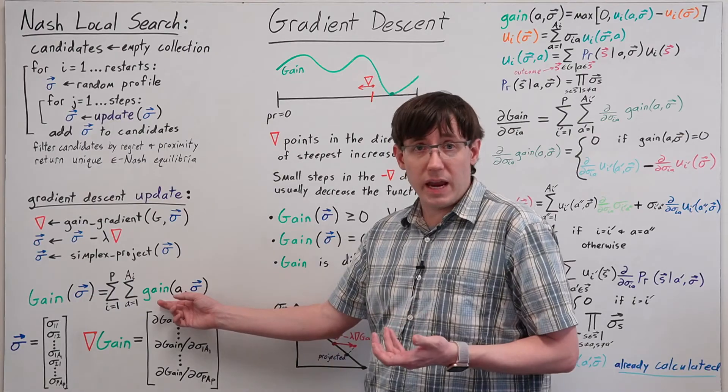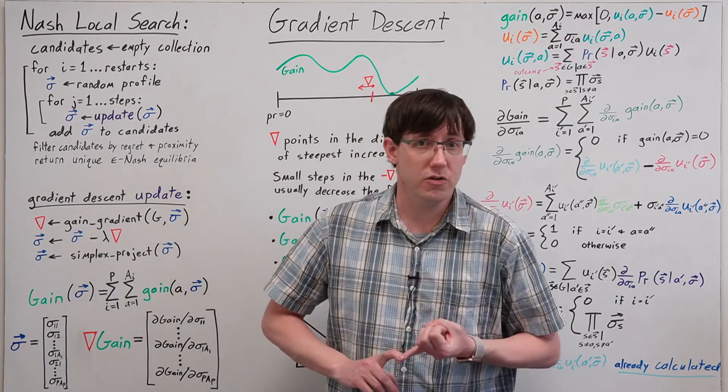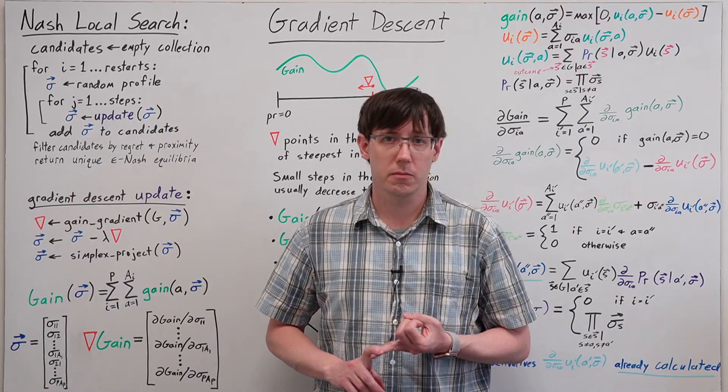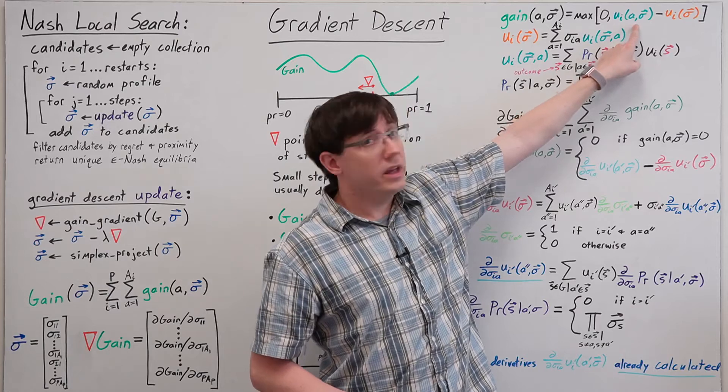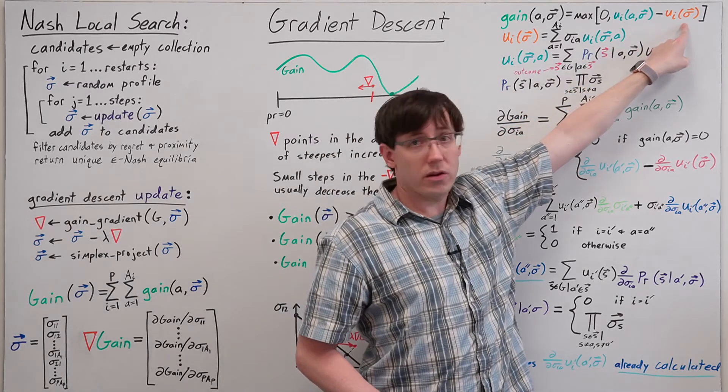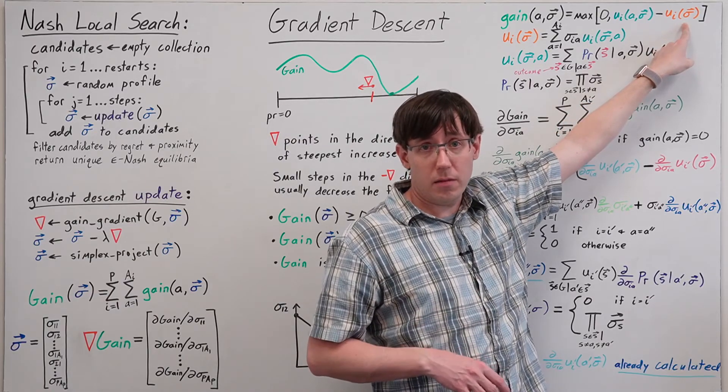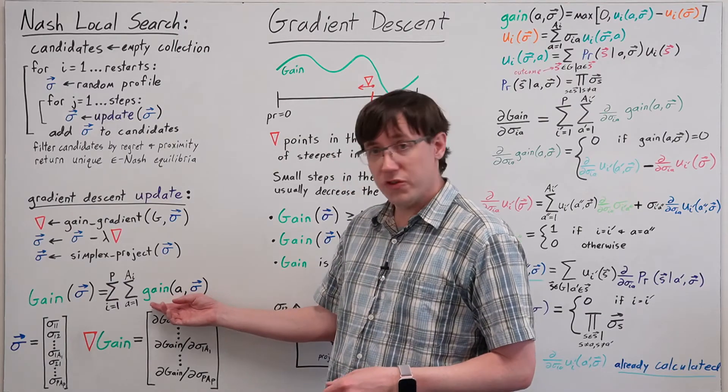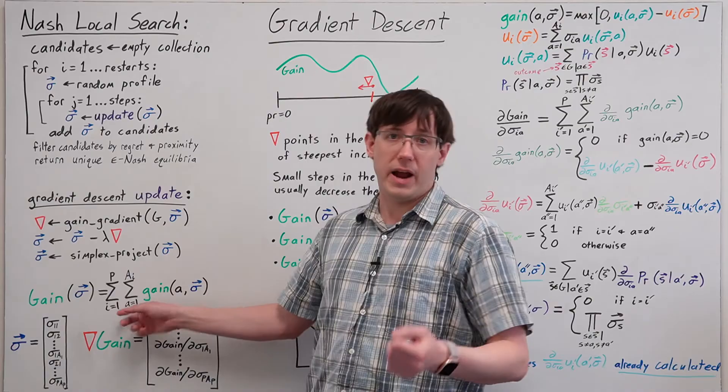This action gain is the same one we've seen before in the context of the Nash advantage function and the regret matching algorithm, and it tells us how much better a player could do if they deviated to some action instead of sticking with the mixed strategy profile. To get the total gain, we just sum this up over all of the players and all of their actions.